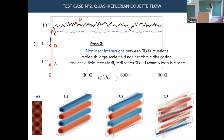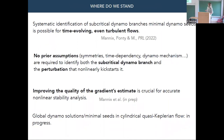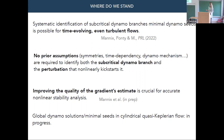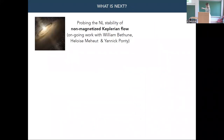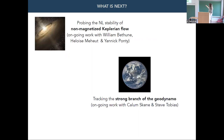So this is where we stand: the method can indeed identify subcritical dynamos and minimal seeds even when the flow is time-evolving or even turbulent. What is really crucial for the accuracy of the nonlinear stability analysis is the quality of the gradient estimate — if it's too poor, the procedure never converges. Paul has been working a lot on optimizing the optimization algorithm and the way the adjoint code is obtained, which significantly improves convergence. We are now looking at global solutions in the cylindrical quasi-Keplerian case. We are also looking at the nonlinear stability of non-magnetized Keplerian flows with William Béthune, Eloïse Mu, and Yannick — which is supposed to be an open question in the field.